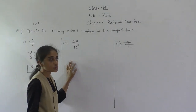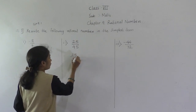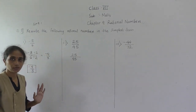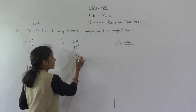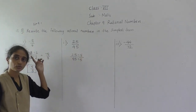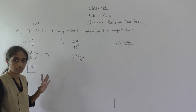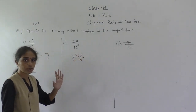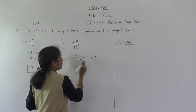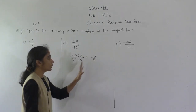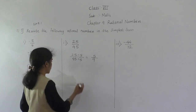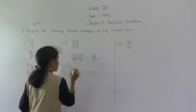Next: 25 upon 45. Both numbers are divisible by 5. Dividing: 5 fives are 25, 5 nines are 45, giving 5 upon 9. We cannot reduce further, so 5 upon 9 is the answer.